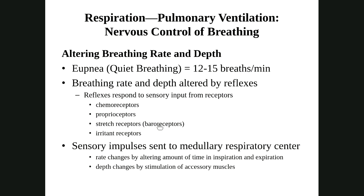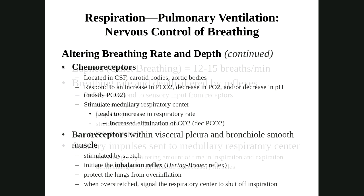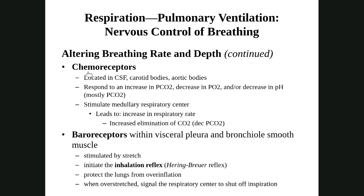There are four types of receptors: chemoreceptors, proprioceptors, baroreceptors or stretch receptors, and irritant receptors. Chemoreceptors detect O2, CO2, and pH — or PCO2, PO2, and pH. We pay attention to oxygen levels, CO2 levels, and pH levels in the blood. Baroreceptors detect pressure — when the lungs stretch too much, that triggers a baroreceptor. We don't want to overinflate the lungs because that can rupture alveoli, so baroreceptors help protect against overinflation.